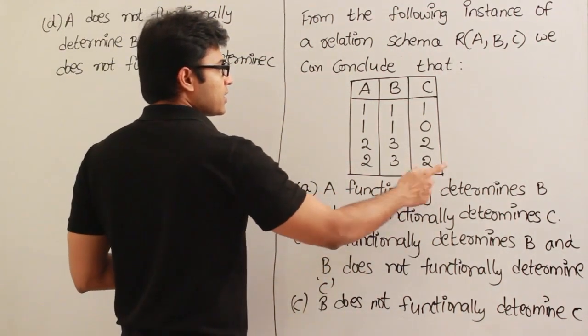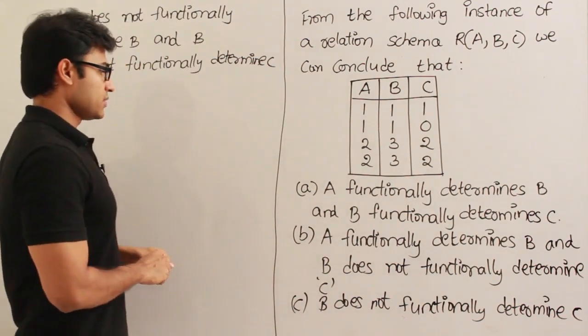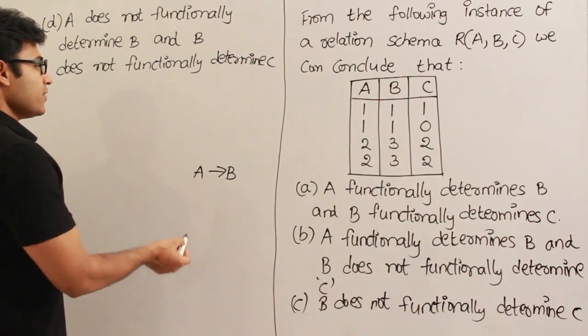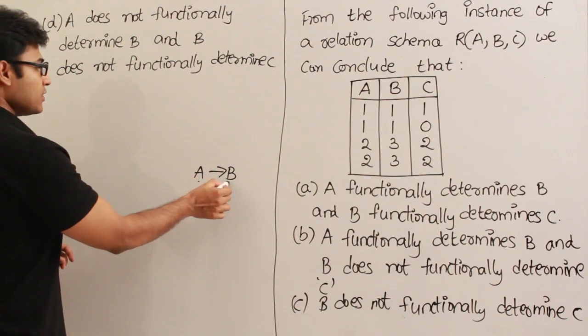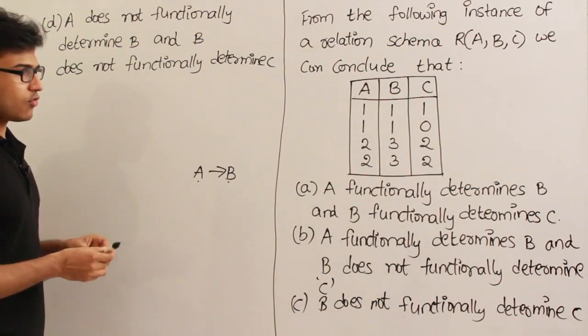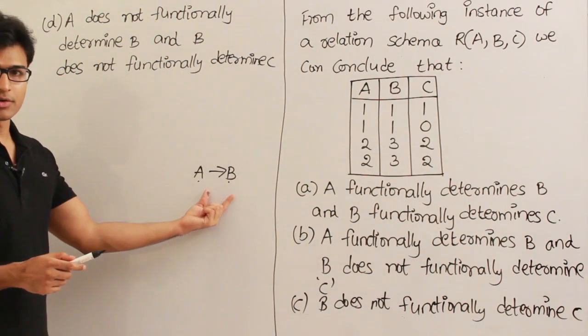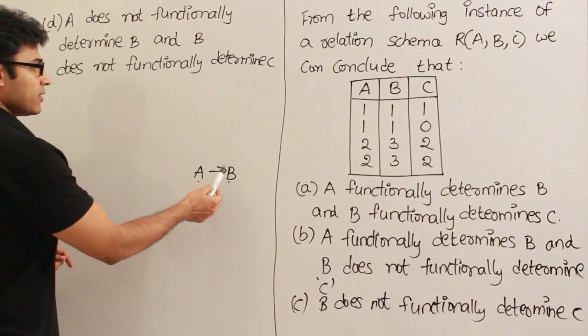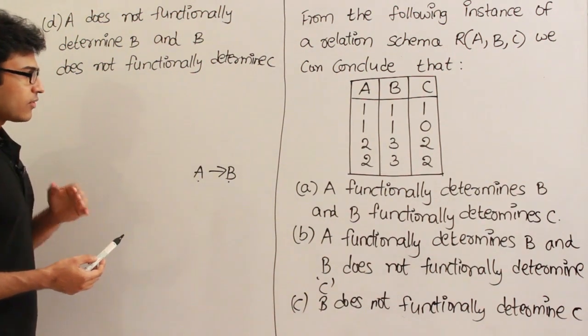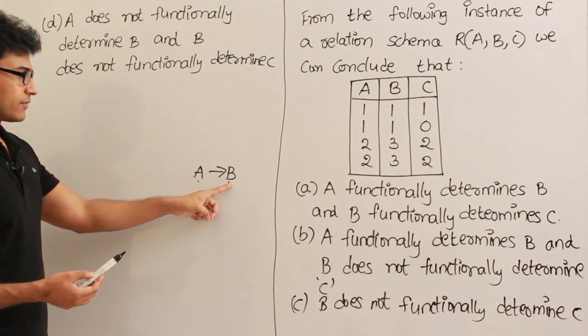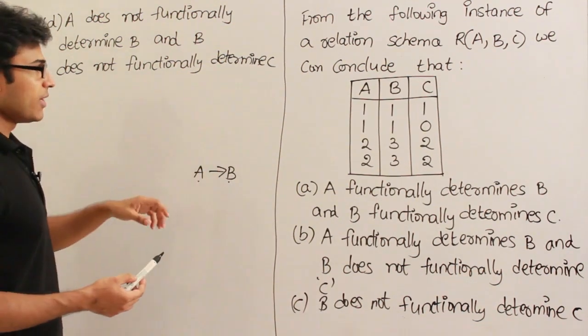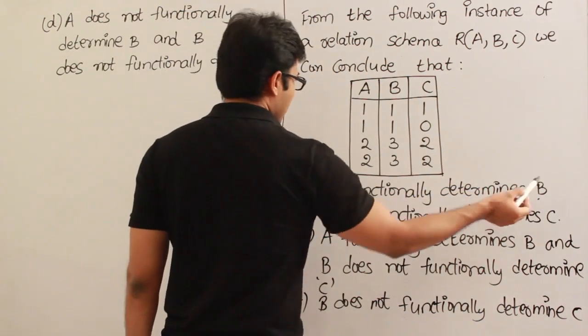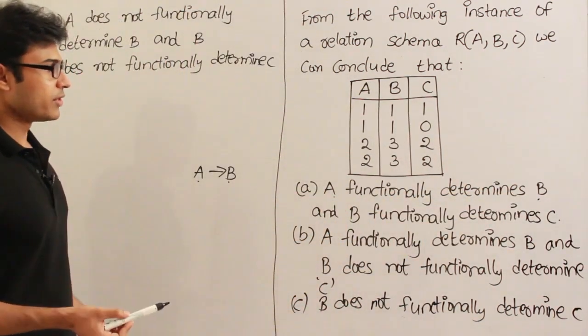They are saying A functionally determines B. If you write option A, they are saying this is true. But one thing is we can never conclude that a functional dependency is true based on the instance. Whatever the question, as long as it is non-trivial, we can never be sure about any functional dependency. Unless we know the requirement analysis, by looking at the table we should not say it. We can never declare it. So A functionally determines B, we should not say it because we cannot conclude it.